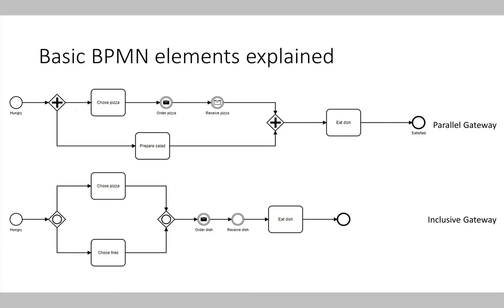The parallel gateway executes the process in a way that both process paths are executed in parallel. So when the process arrives at the AND split gateway, it is split into two parallel process paths. We in parallel choose a pizza, order it, and receive it, while also preparing a salad. And once both process paths are finished, they are joined together and we can eat our dish consisting of a pizza and a salad.